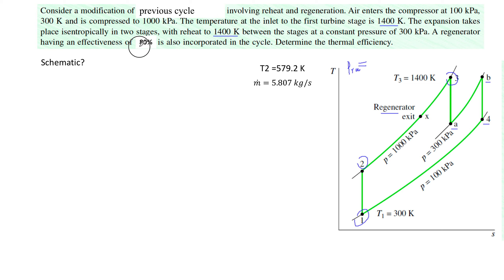Because regenerator effectiveness is given as 80%, point X on the diagram will be lower than point four. Using the regenerator effectiveness relation, we can find the enthalpy at X. With all enthalpies known, we can find the thermal efficiency for this cycle with reheating and regeneration.